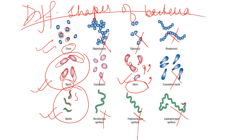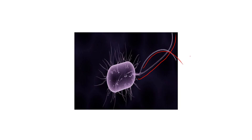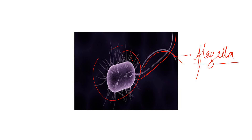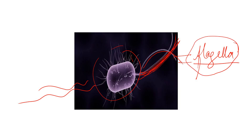Some monerans have a whip-like structure called flagella. With the help of this flagella, the organism keeps on moving ahead. Those who do not have flagella cannot move and remain stagnant in one place. Those monerans who have this whip-like structure called flagella can keep on moving from one place to another. This is all about Kingdom Monera.